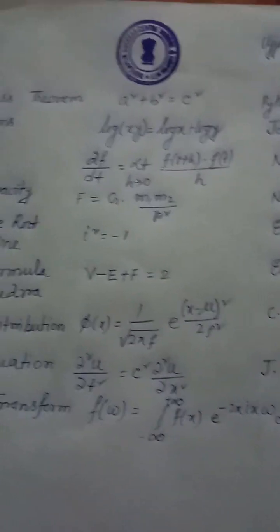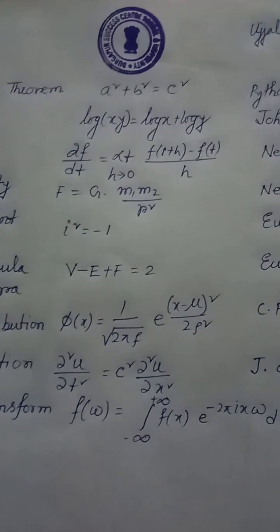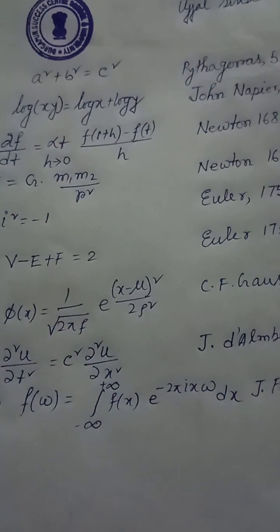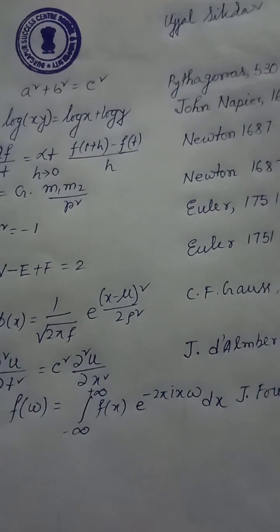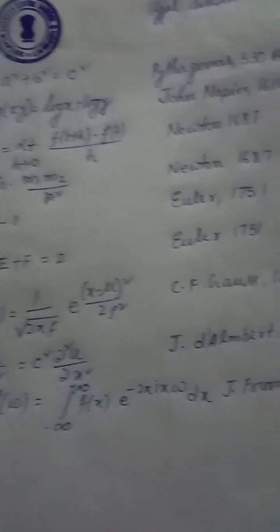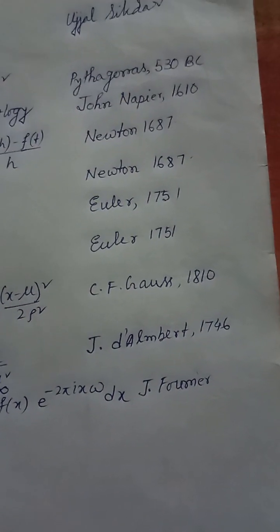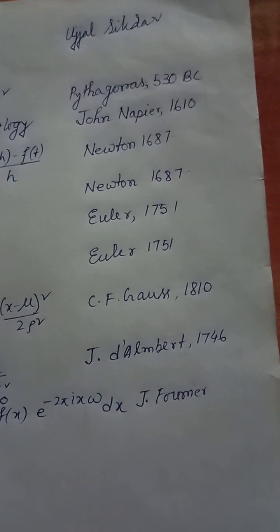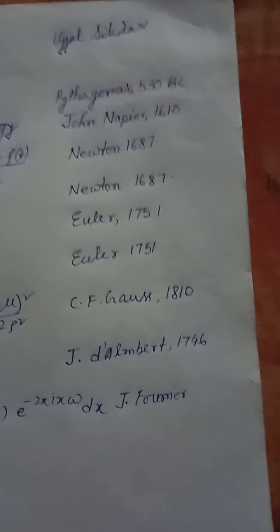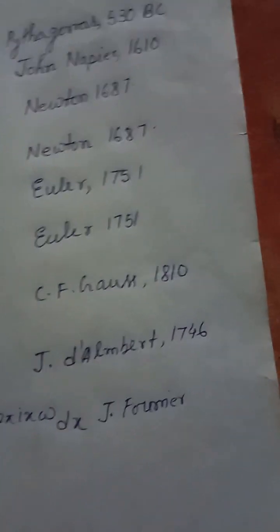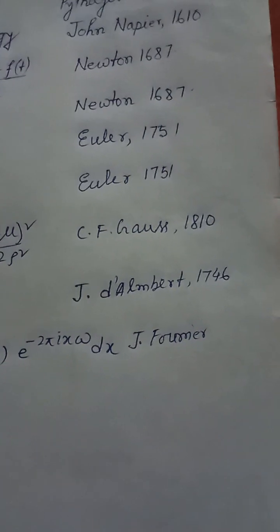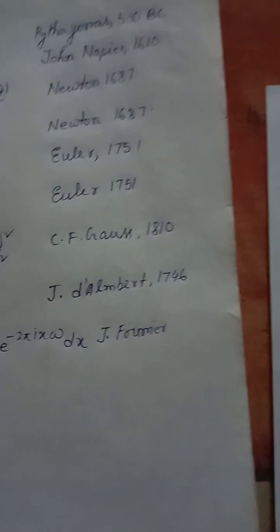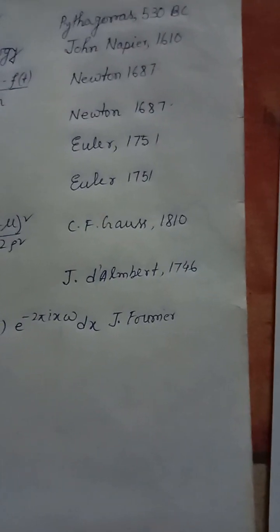Equation 9 — Fourier transform: F(ω) = ∫ from −∞ to +∞ f(x) · e^(−2πxiω) dx. Jean-Baptiste Joseph Fourier, 1822.